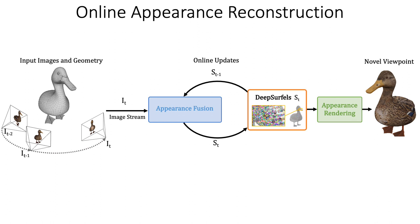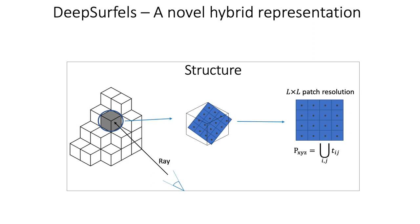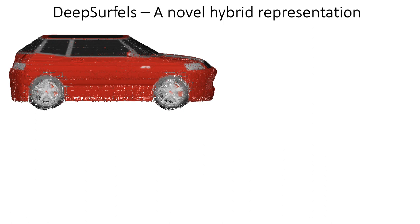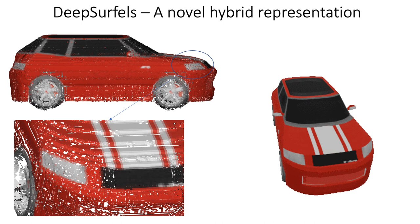For the online fusion of appearance information, our pipeline takes as input a stream of RGBD frames and fuses them iteratively into the deep surfel representation. With a differentiable renderer, we can optimize the scene representation in a self-supervised manner or generate novel views of the scene. Deep surfel is a sparse grid of patches with surface-oriented elements that maintain color information or learned feature vectors. These surface elements are fitted recursively to a given SDF geometry, and the surface-aligned anchoring allows for an efficient encoding of high-frequency appearance information and differentiable rendering of novel views.